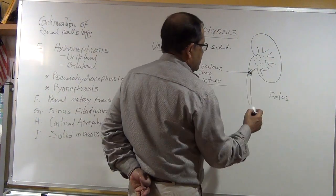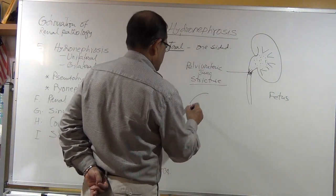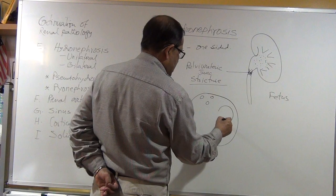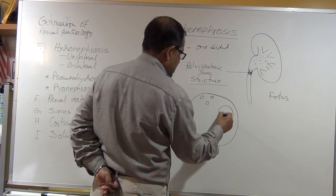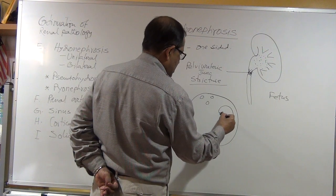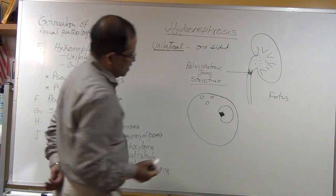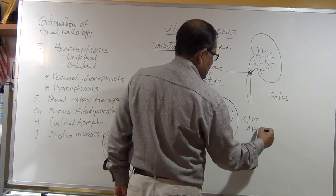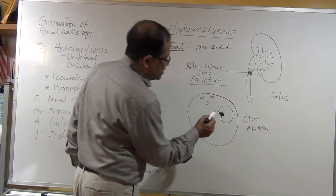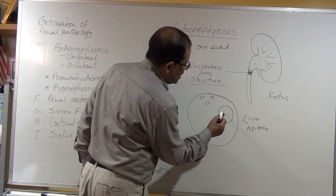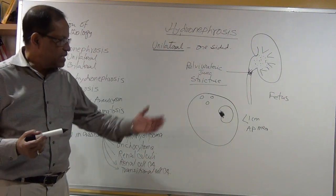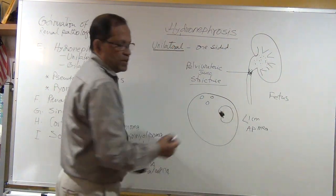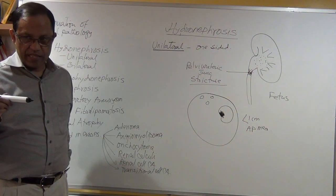Sonographically, if you scan a baby still in the uterus and on the left side you see the renal pelvis is anechoic, it should measure less than one centimeter in AP diameter — usually 4, 5, or 6 mm. But if you get greater than one centimeter, it is declared as hydronephrosis in the fetus.